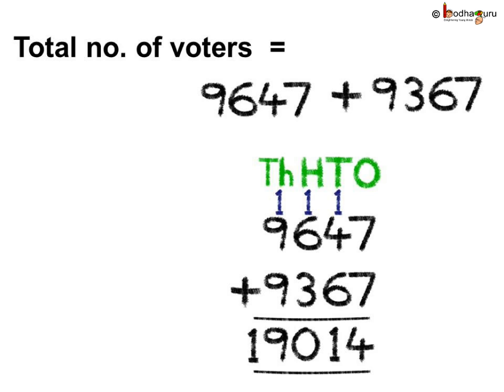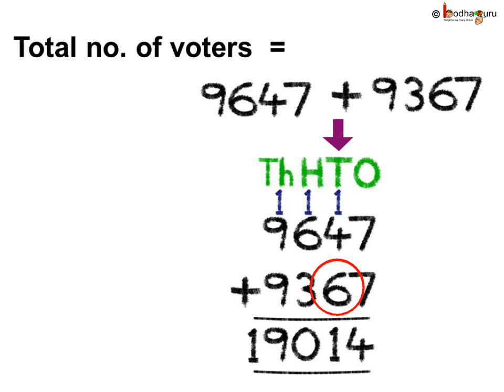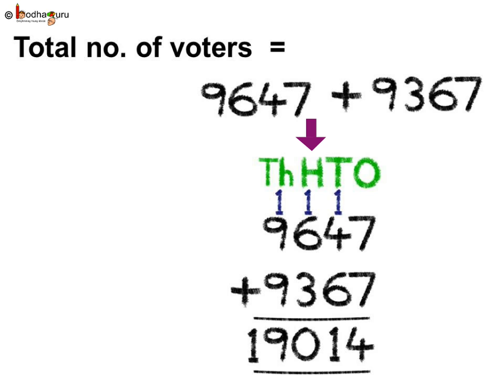Let us add 9,647 plus 9,367. Starting from the ones position: 7 plus 7 is 14, so 1 is carried over. 6 plus 4 is 10, plus the carry over is 11. Coming to the hundreds position: 6 plus 3 is 9, plus 1 is 10. Here again, 1 is carried forward.